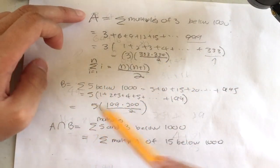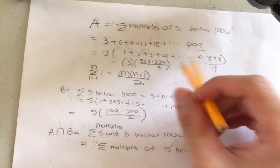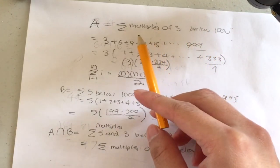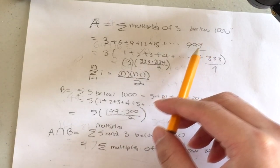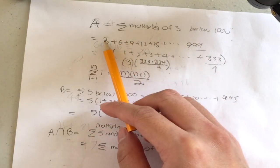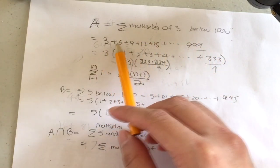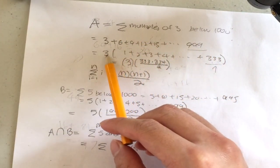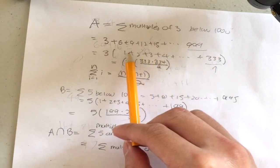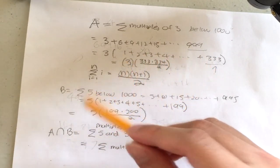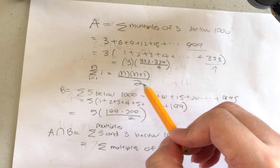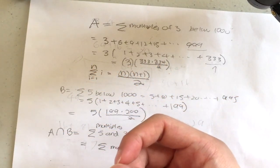To build the function: first find the last number in the sequence below 1000. For three, that was 999, so 999 / 3 = 333. We factor out n from the sequence, then we can sum from 1 to that last number using n × (lastNum × (lastNum + 1) / 2).